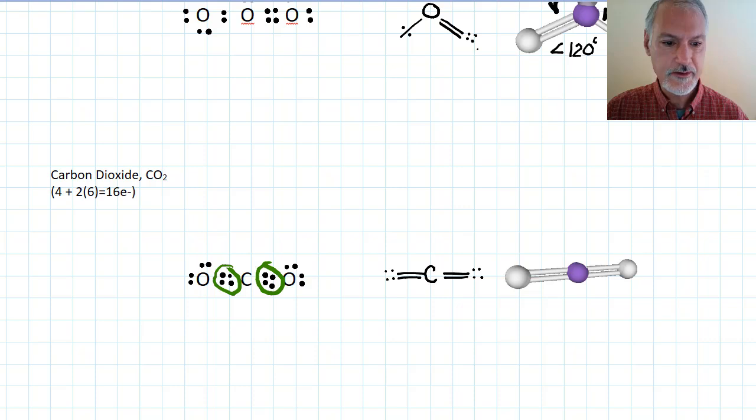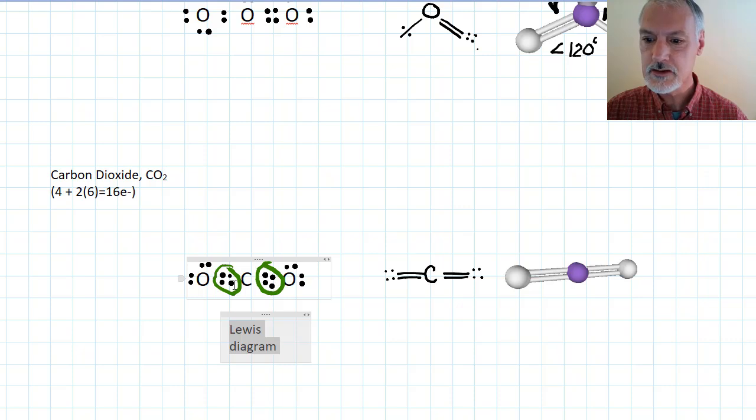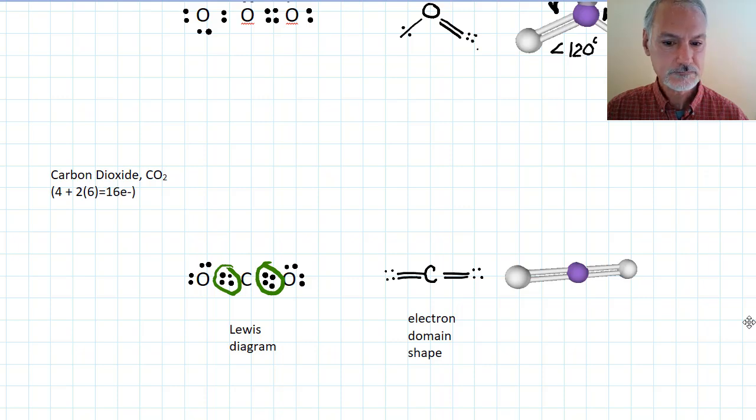So to finish, a little summary. Always begin with a Lewis dot diagram to understand how many electron domains you have around your central atom. Once you have knowledge of those numbers of electron domains, think about how those domains are going to get as far away from each other as possible, and the angles they would have. And finally, think about some of those pairs of electrons or domains being bonded and some of those domains not being bonded, and how that will affect and distort our angle or the shape of our molecule. So you need to go through thinking about all three processes to be able to come up with the correct shape.